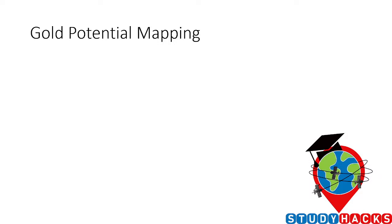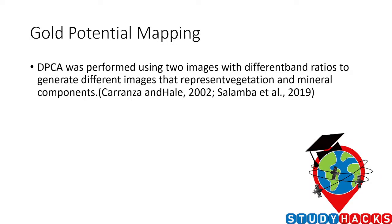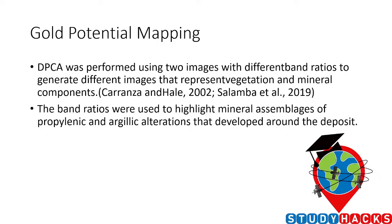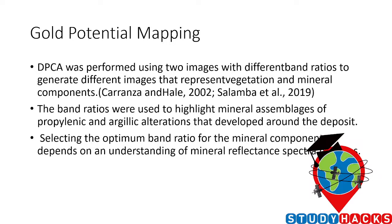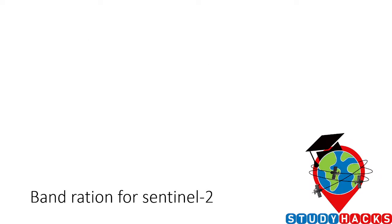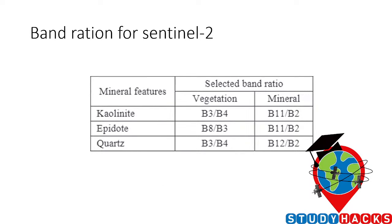For gold potential mapping, we are using DPCA — this is performed using two images with different band ratios to generate images that represent vegetation and mineral components. The band ratios are used to highlight the mineral assemblages and the argillic alteration that developed around the deposit. We select the optimum band ratio for mineral components based on an understanding of mineral reflectance spectrum patterns.